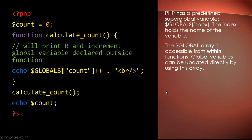PHP has a predefined super global variable. It's an array and it's the dollar sign globals with an S and all caps. The index holds the name of the variable, so here it's declared and then this is the name of that variable and it will hold the value as an element. The global array is accessed from within a function, between the brackets, and can be updated directly by using that array.